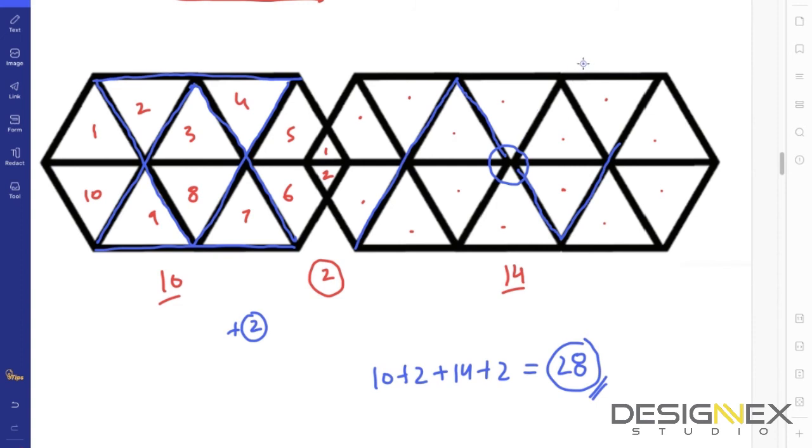So many people have solved this question and they say the answer key is wrong. But actually, if you observe it very carefully, this does not make a triangle at all. This also doesn't make a triangle. This section does not even make a triangle at all. So these four I won't be counting.